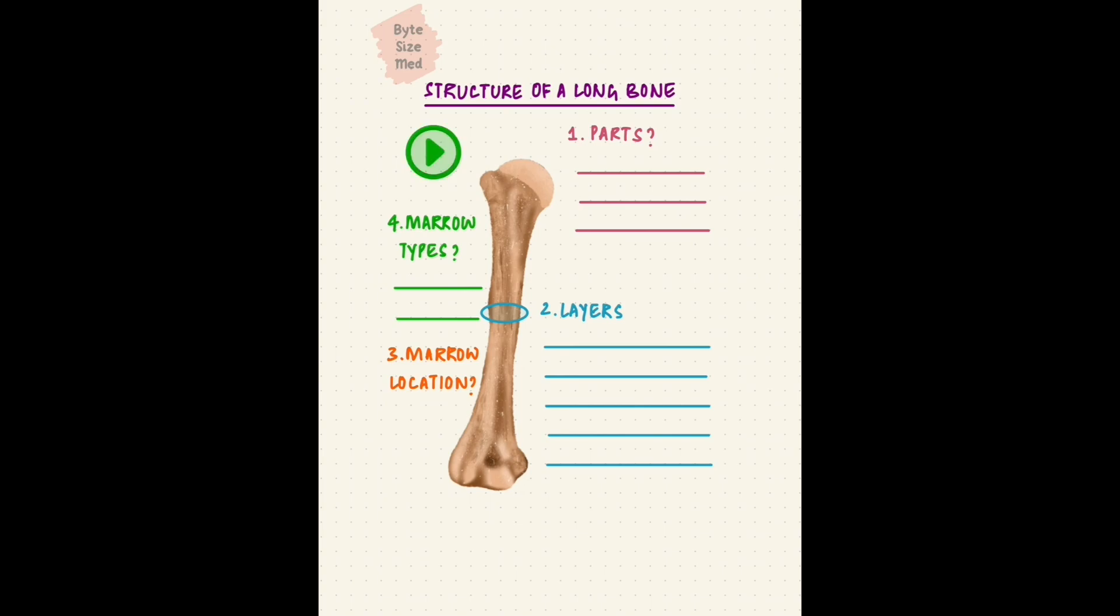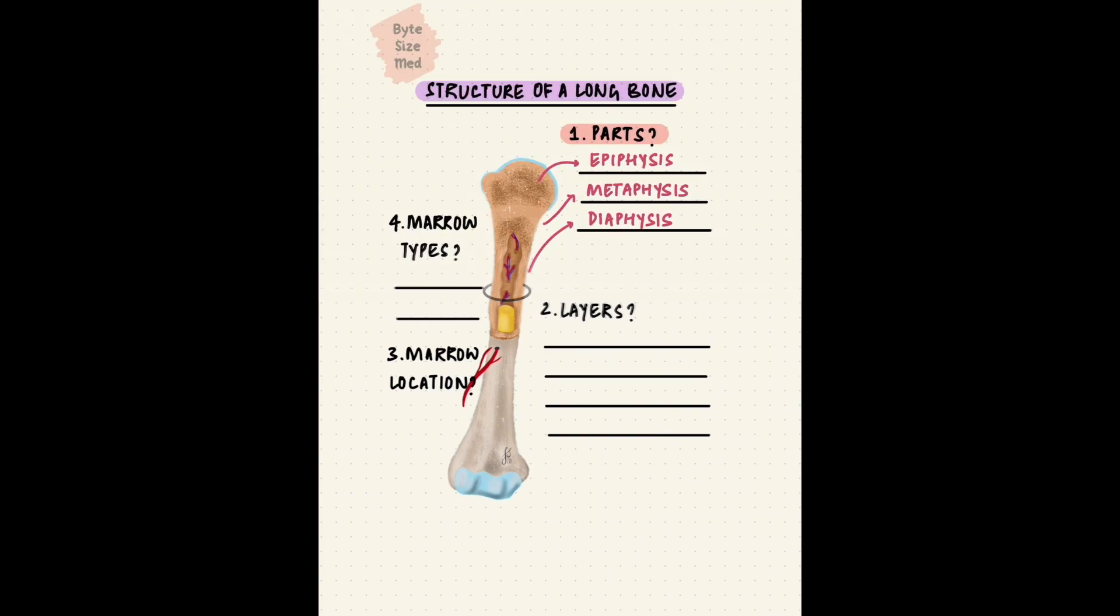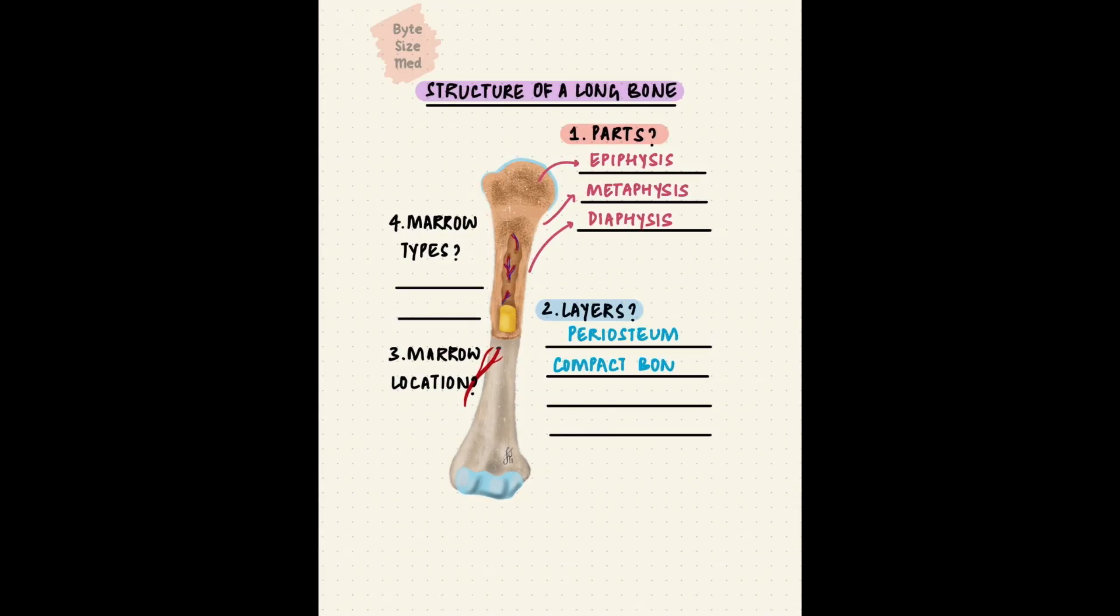Time's up. Long bones have three parts: the shaft is called the diaphysis, the ends are called the epiphyses, and the expanded ends of the diaphysis form the metaphyses. In general, from the outside in, bone has a periosteum, compact bone, cancellous bone, and a central medullary cavity.